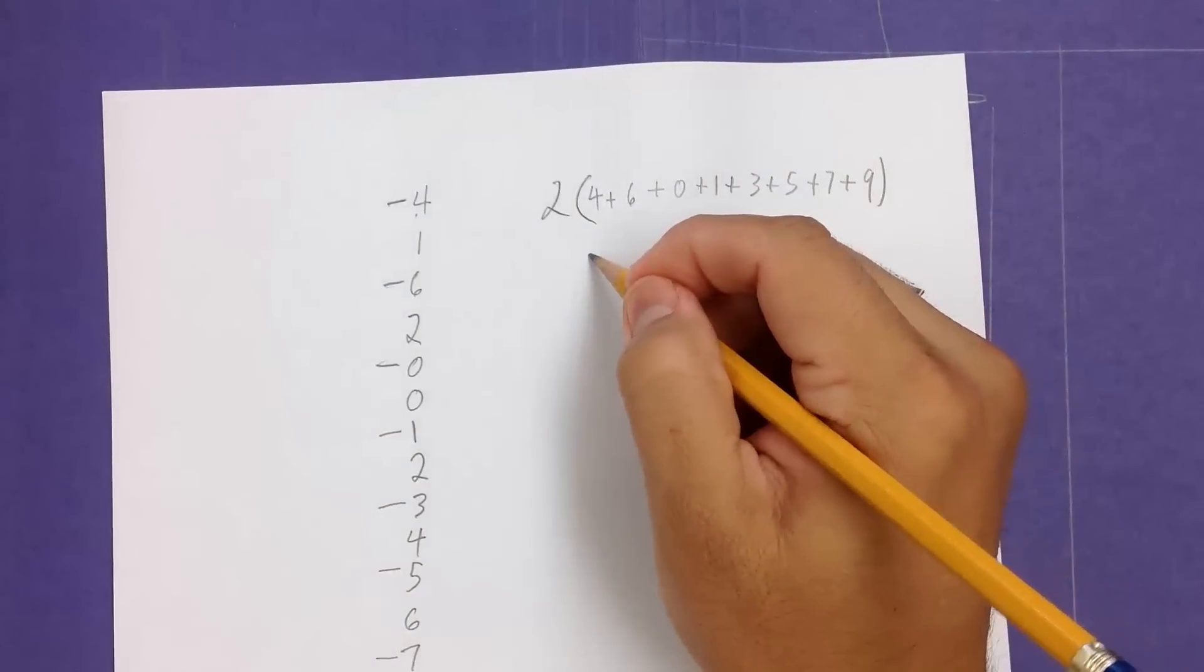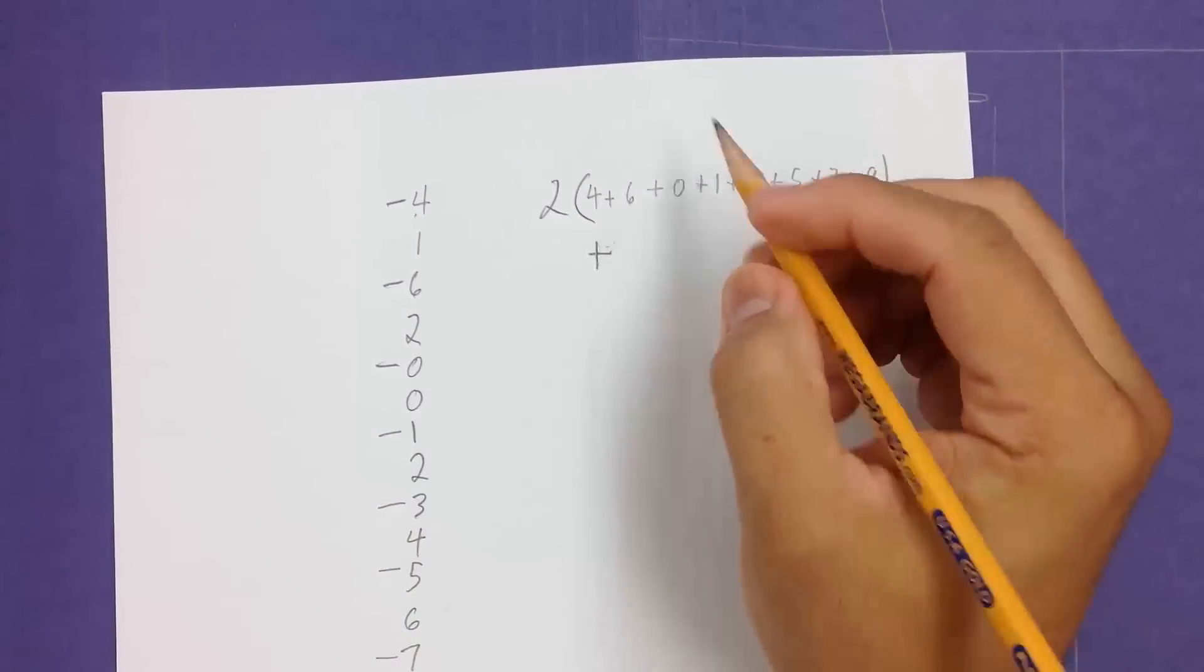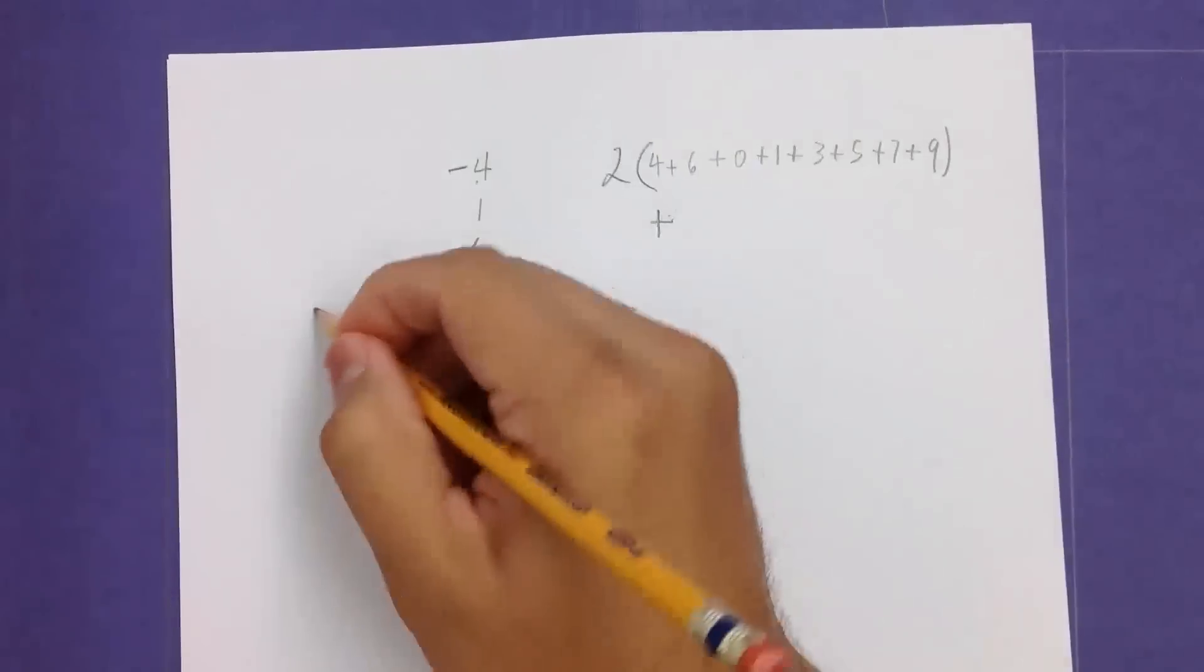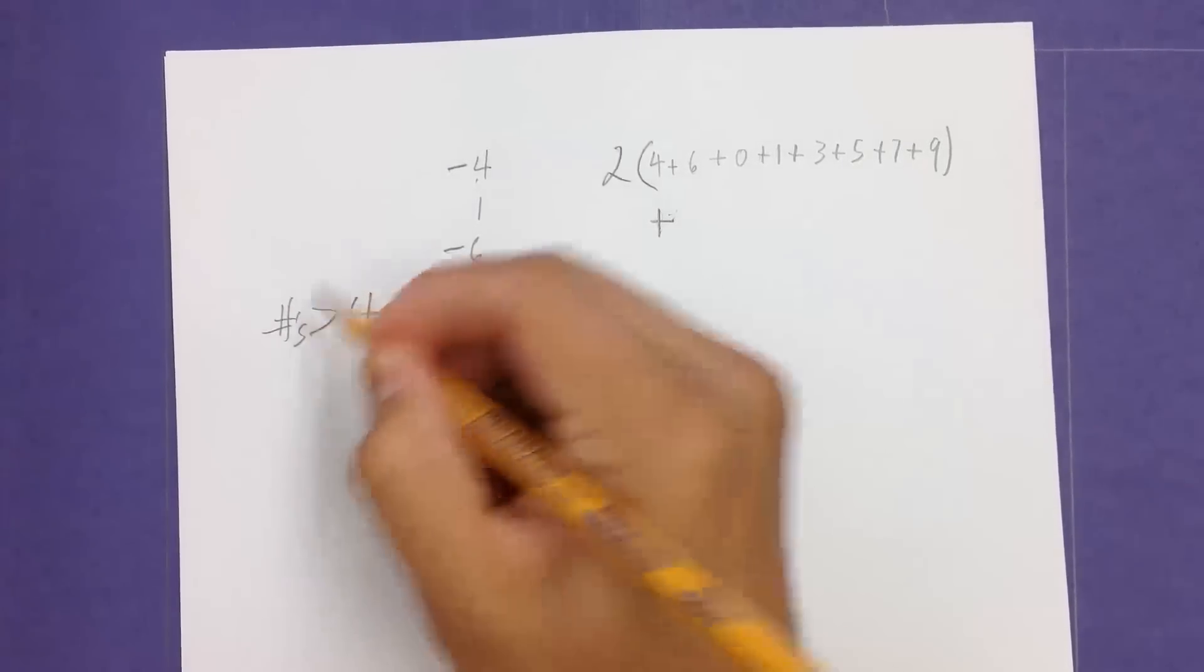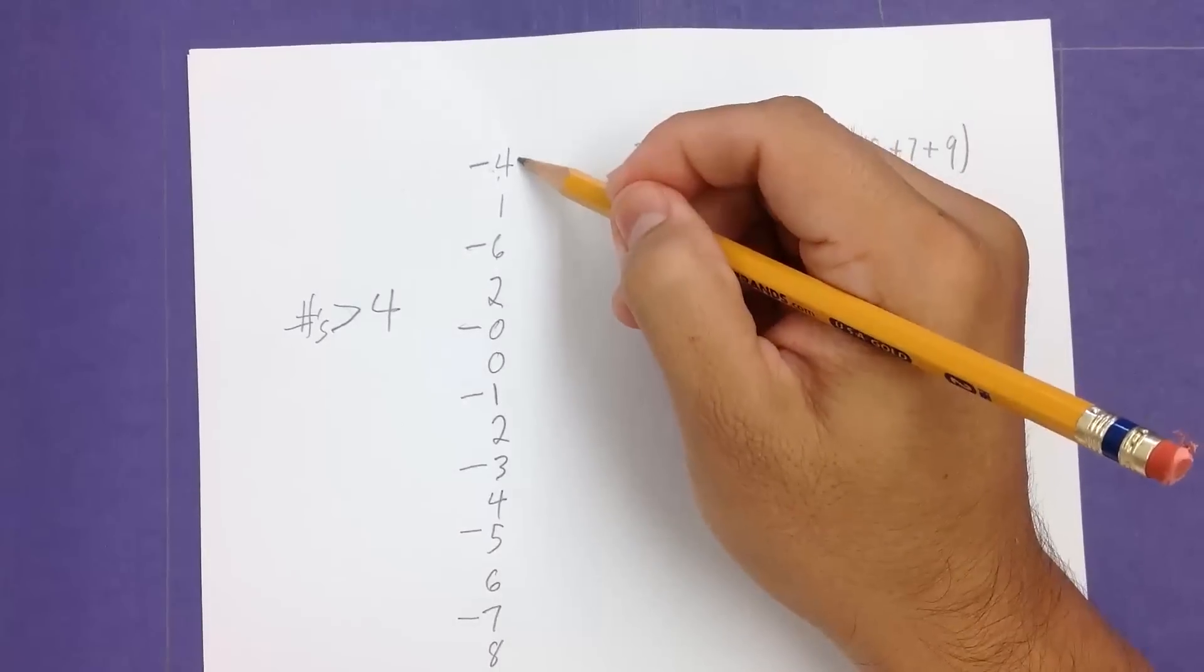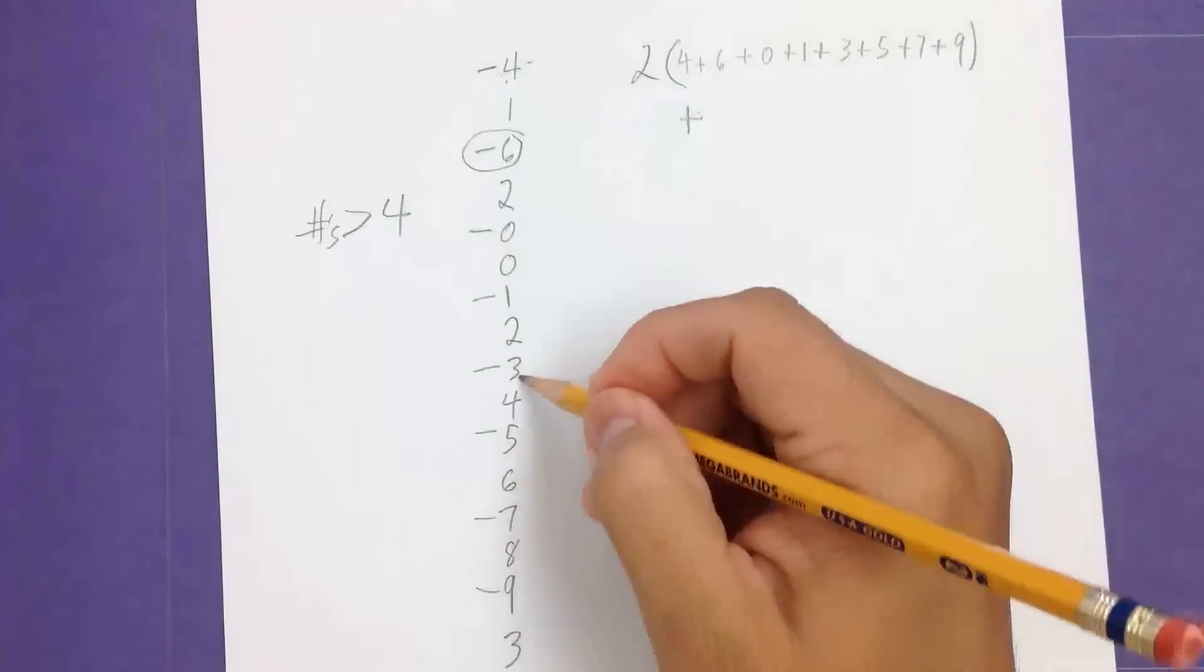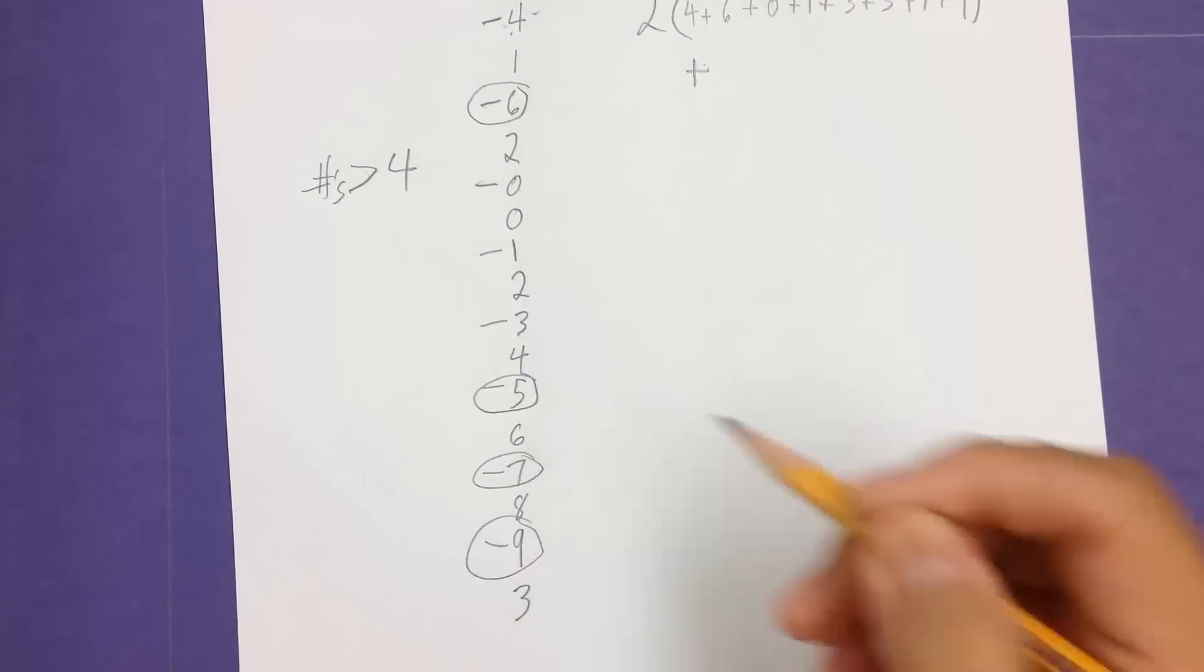And then the second step is that we look, we're going to be adding more to this. We look at the odd positions again, and we look for numbers greater than 4. So we're looking for numbers greater than 4. So the first one's not greater than 4, so I'm not going to circle it. 6 is greater than 4. The 0 is not. 1 is not. 3 is not. 5 is. 7 is. And 9 is.